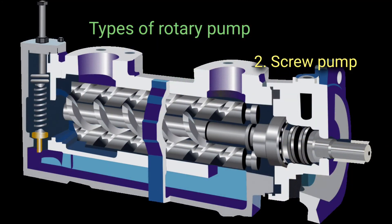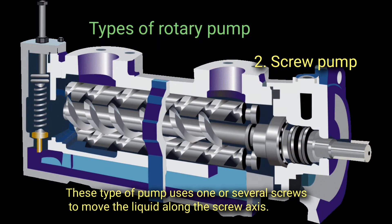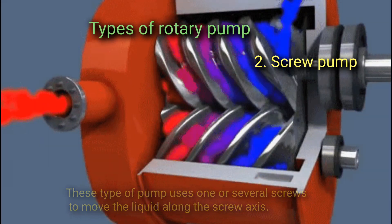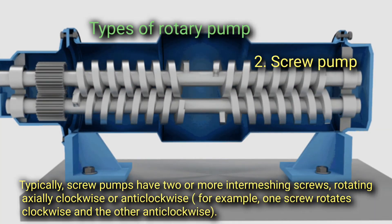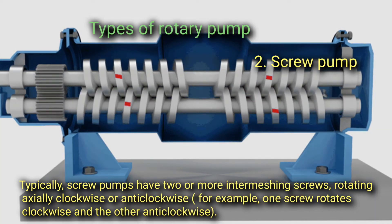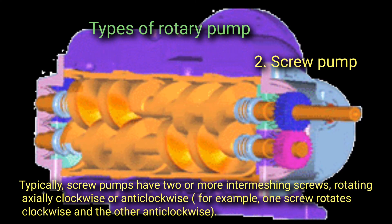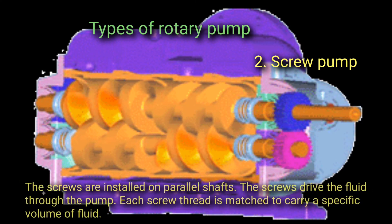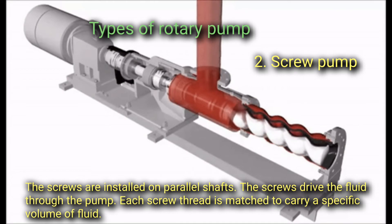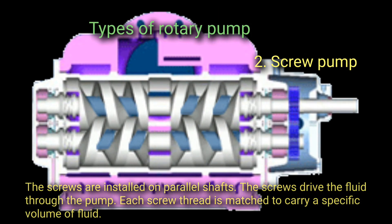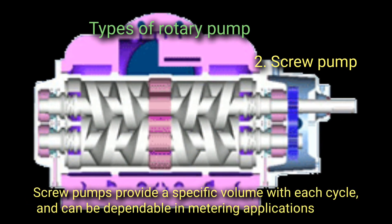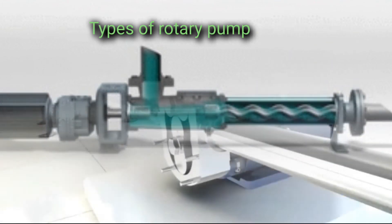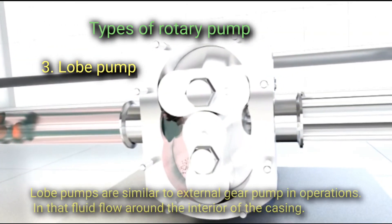Screw pumps use one or several screws to move the liquid along the screw axis. Typically, screw pumps have two or more intermeshing screws rotating axially — one clockwise and the other anti-clockwise — installed on parallel shafts. The screws drive the fluid through the pump, and each screw thread carries a specific volume of fluid. Screw pumps provide a specific volume with each cycle and can be dependable in metering applications.